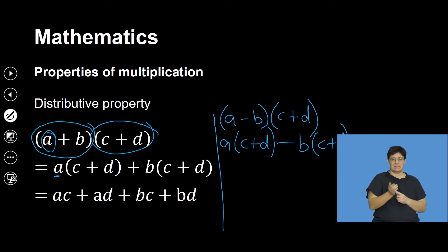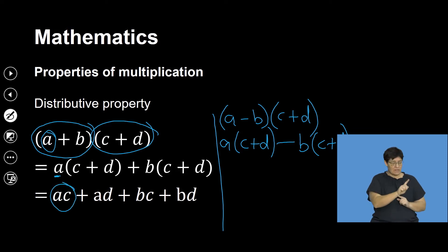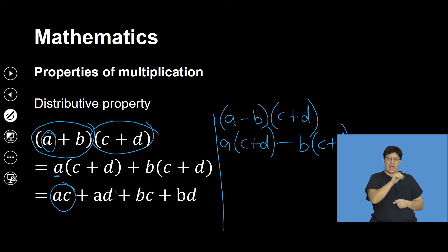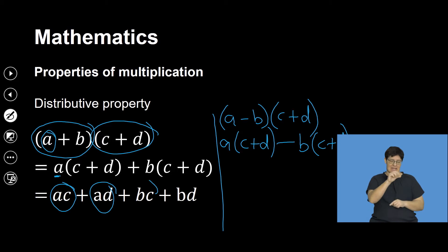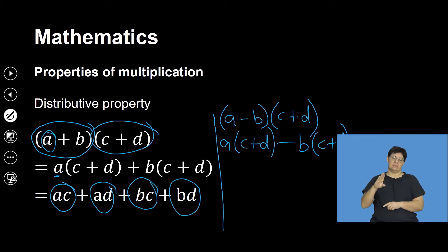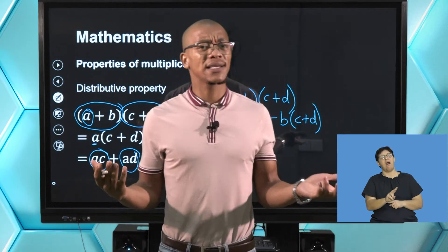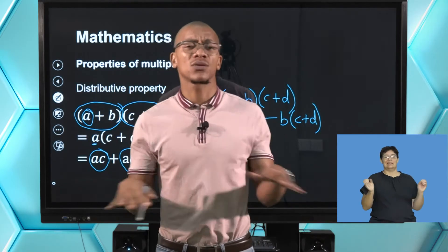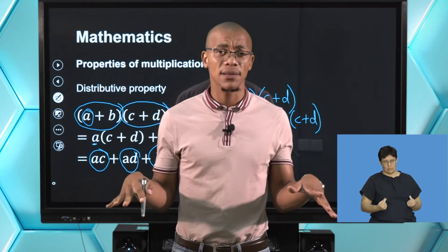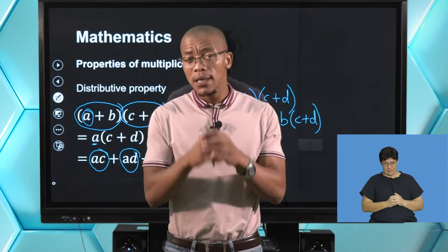If you multiply this out using what we've spoken about, it gives ac plus ad minus bc minus bd. You can see those are not like terms — they are unlike terms. But what we've looked at is that multiplication is quite a big thing to understand.